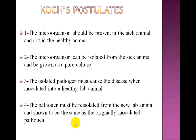Koch presented three rules for experimental proof of the pathogenicity of a microorganism in 1883, and a fourth rule was added by E.F. Smith in 1905. Briefly, these rules are as follows. Rule 1: the microorganism should be present in the sick animal and not in the healthy animal — in other words, the suspected organism must be constantly associated with the disease. Rule 2: the microorganism can be isolated from the sick animal and grown as a pure culture. It is crucial to isolate the microorganism from tissues or samples of the diseased animal and obtain a pure culture devoid of contamination with other microorganisms not causing the disease.